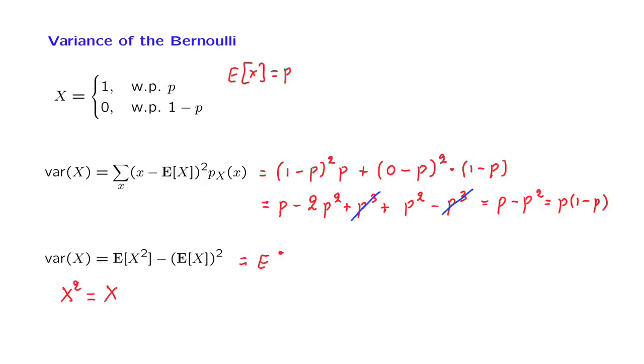So what we have here is just the expected value of X minus the expected value of X squared to the second power. And this is p minus p squared, which is the same answer as we got before, p times (1 minus p). And we see that the calculations and the algebra involved using this formula were a little simpler than they were before.